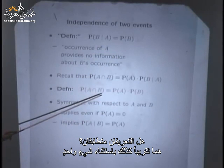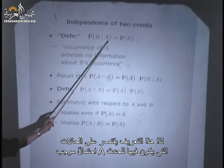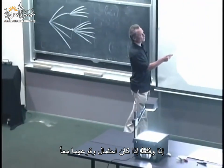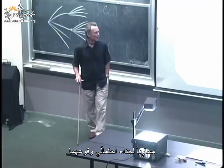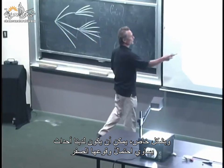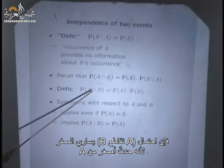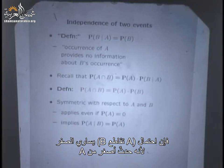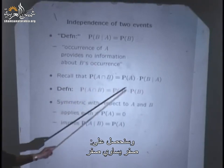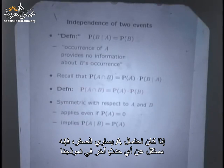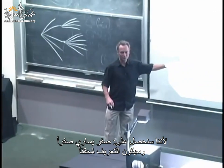We say two events are independent if and only if P(A∩B) = P(A)·P(B). We can have events of zero probability — there's nothing wrong with that. If A has zero probability, then A∩B also has zero probability, and we get 0 = 0. So an event of zero probability is independent of any other event in the model, which is a little harder to reconcile with intuition, but it's part of the mathematical definition.